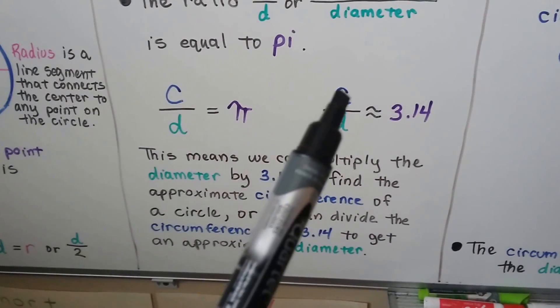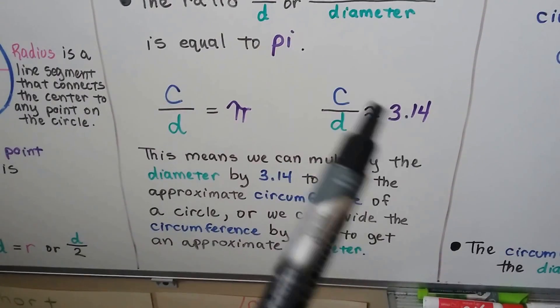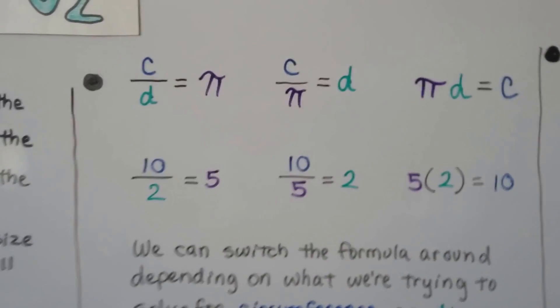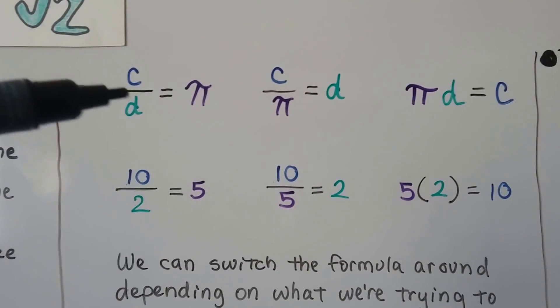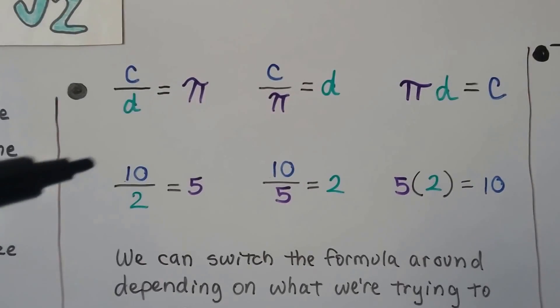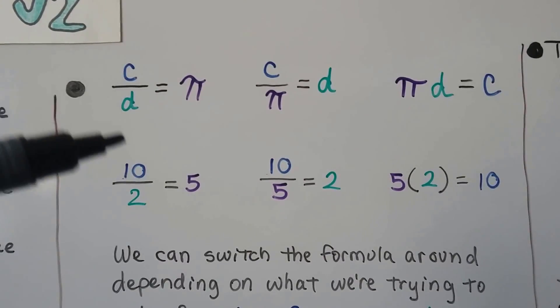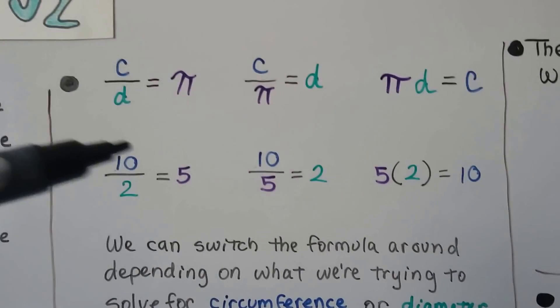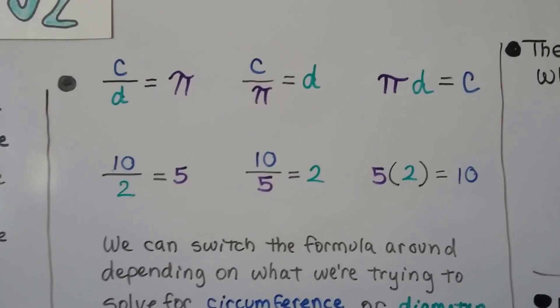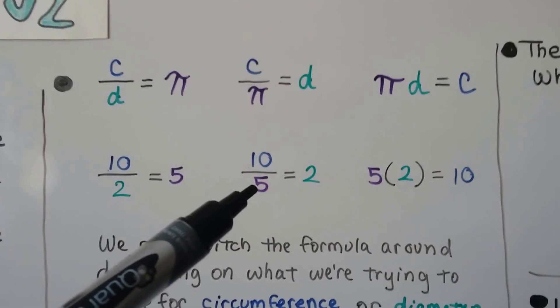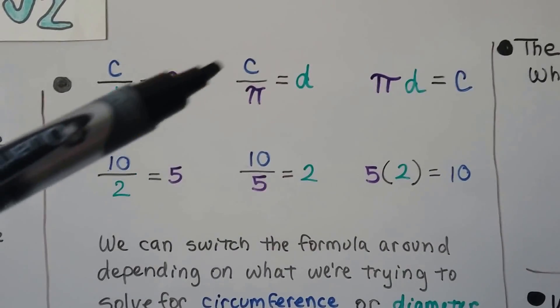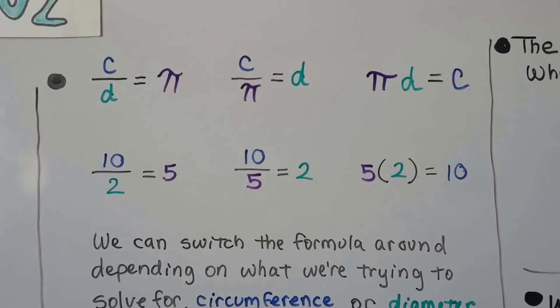We can also divide the circumference by 3.14 to find the diameter. And if that's confusing, let's plug in some real numbers and see how that works. So we have circumference divided by diameter equals pi. What if I had 10? Instead of circumference, we had a 10. Instead of diameter, we had 2. And instead of pi, we had 5. Because we know 10 divided by 2 equals 5. That makes sense, right? But we can also make the 5 the denominator and say 10 divided by 5 equals 2. The circumference divided by pi equals the diameter.